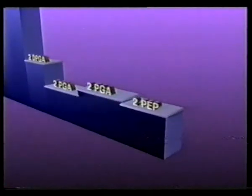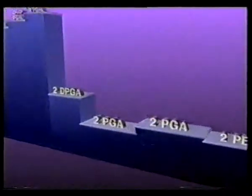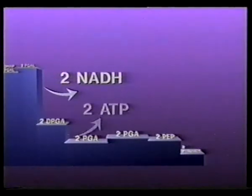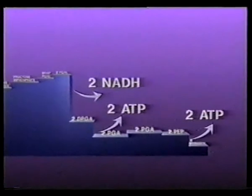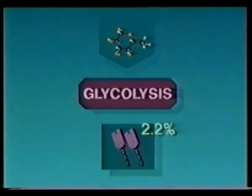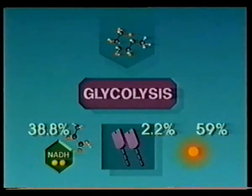Let's step back and place all these reactions in profile. Two molecules of ATP infused energy into the system. From there on, energy was extracted by two NADH molecules and four ATP molecules. So what was the net gain? Two ATPs were consumed, four were produced — the net gain was two. Of the energy contained in the original glucose molecule, these two ATPs account for only 2.2%. The bulk of the energy is distributed between NADH, pyruvate, and heat.